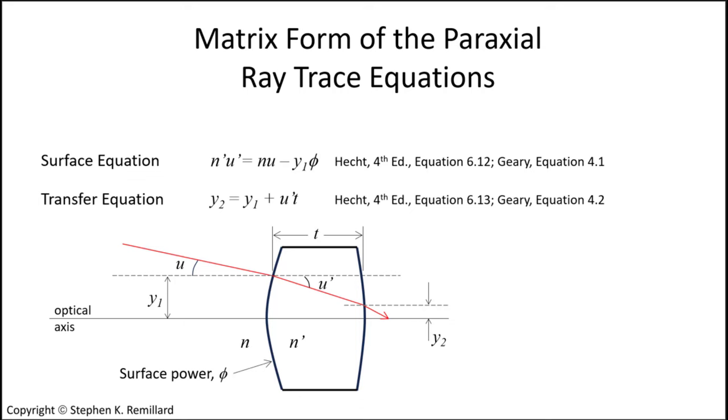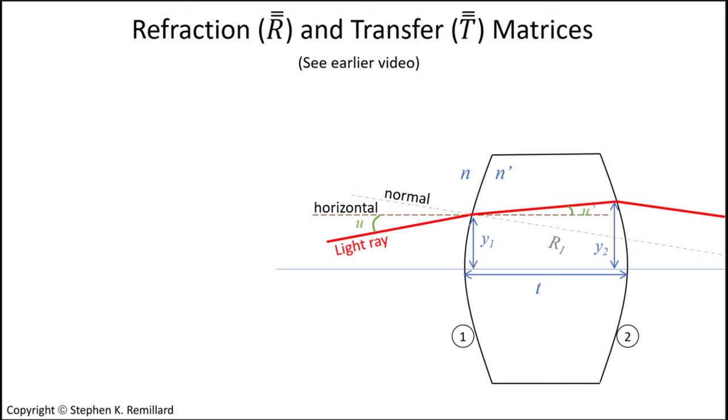And although this is Snell's Law, there's no trigonometric function because the small angle approximation of the paraxial limit is maintained as long as the angle is in radians. Between interfaces, a ray follows a straight line path, so the simple equation of a line describes the transfer of a ray from one surface to the next. It's useful to write these equations in matrix form. In this video, I'll show you how it's done for reflection.